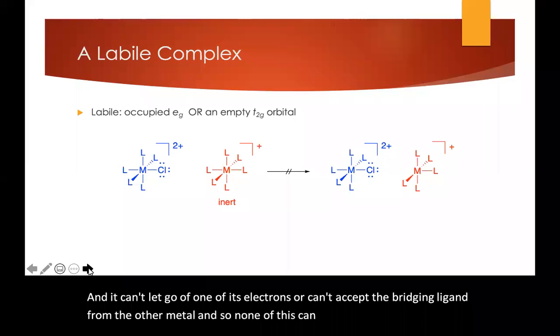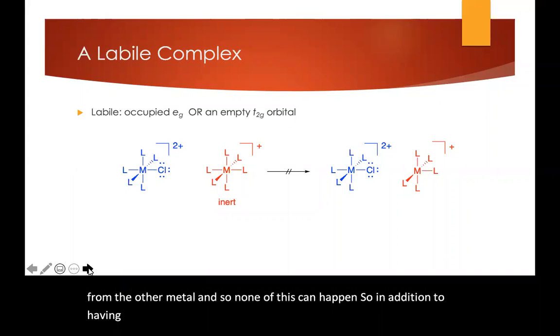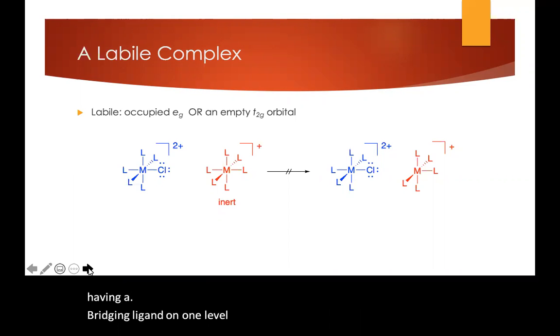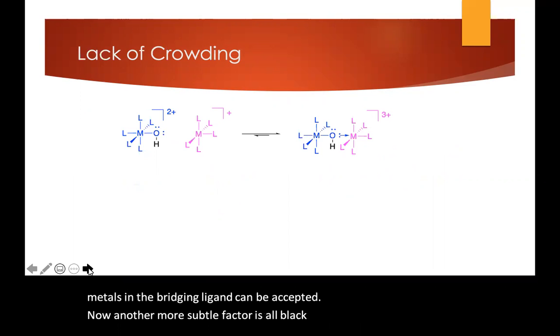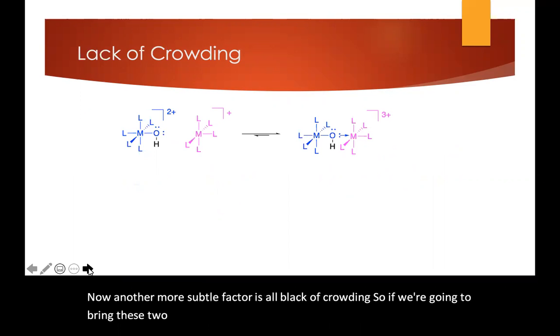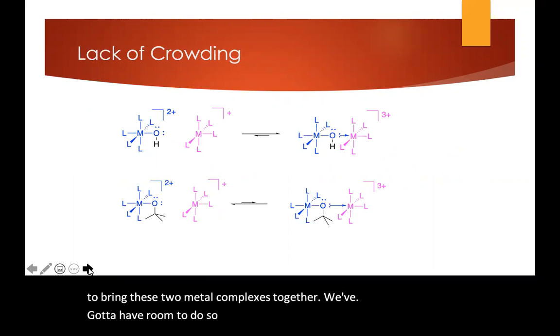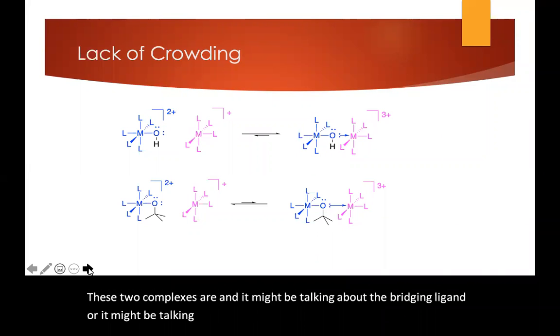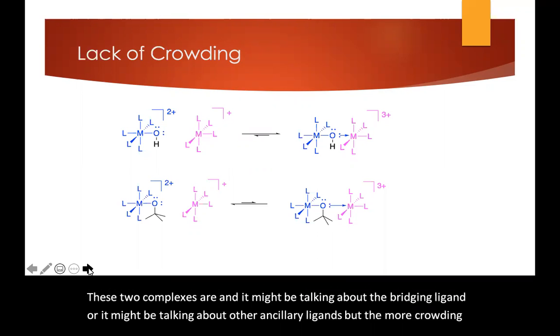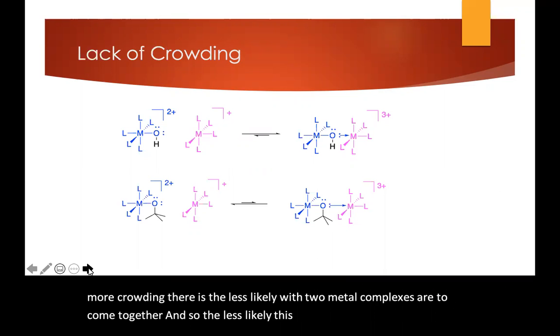So in addition to having a bridging ligand on one metal, we also need to have lability on the other metal so that the bridging ligand can be accepted. Now, another more subtle factor is a lack of crowding. If we're going to bring these two metal complexes together, we've got to have room to do so. The more crowded these two complexes are, whether we're talking about the bridging ligand or other ancillary ligands, the more crowding there is, the less likely the two metal complexes are to come together, and so the less likely this inner sphere electron transfer is going to happen.